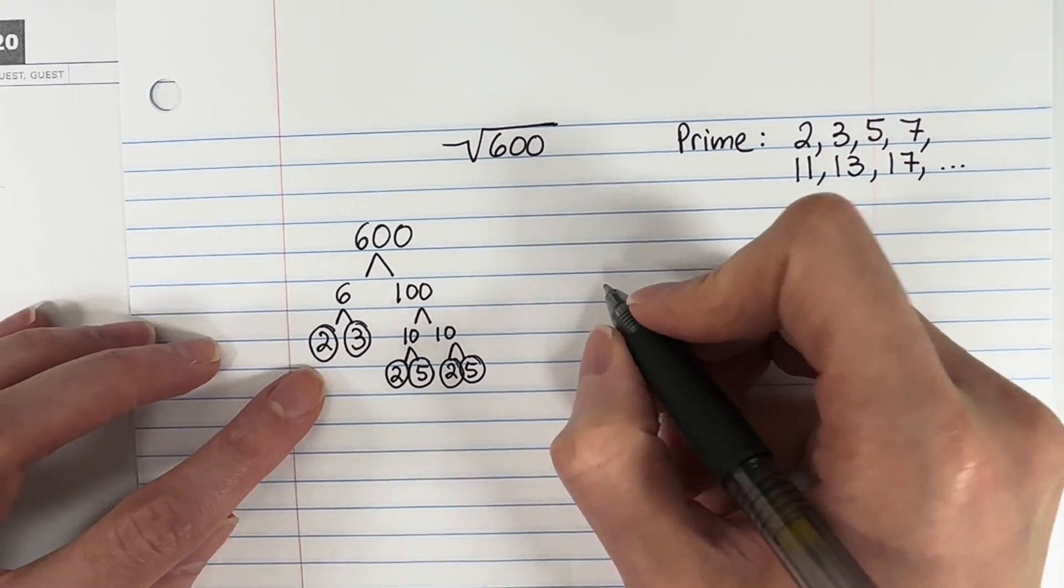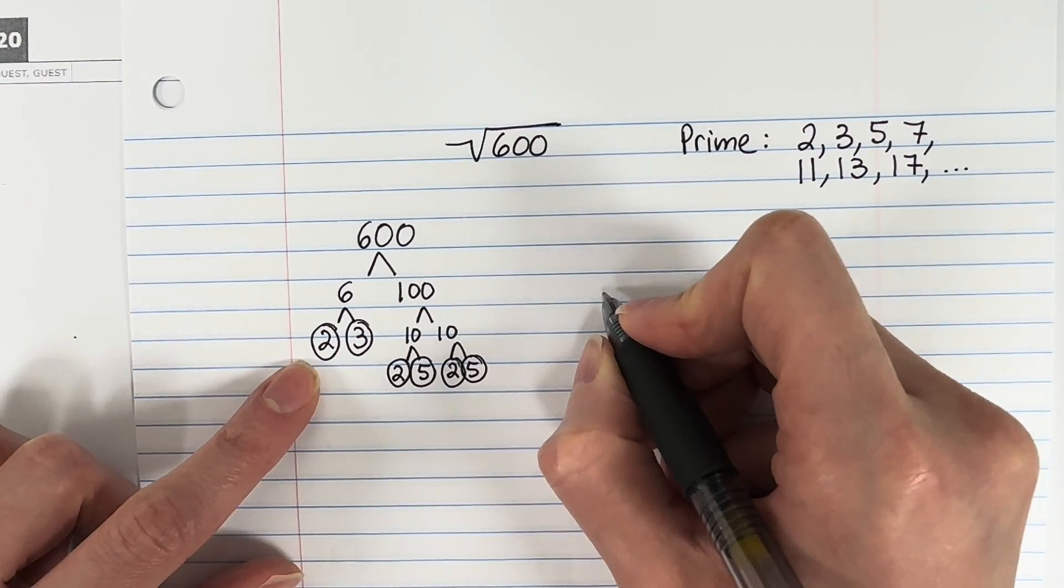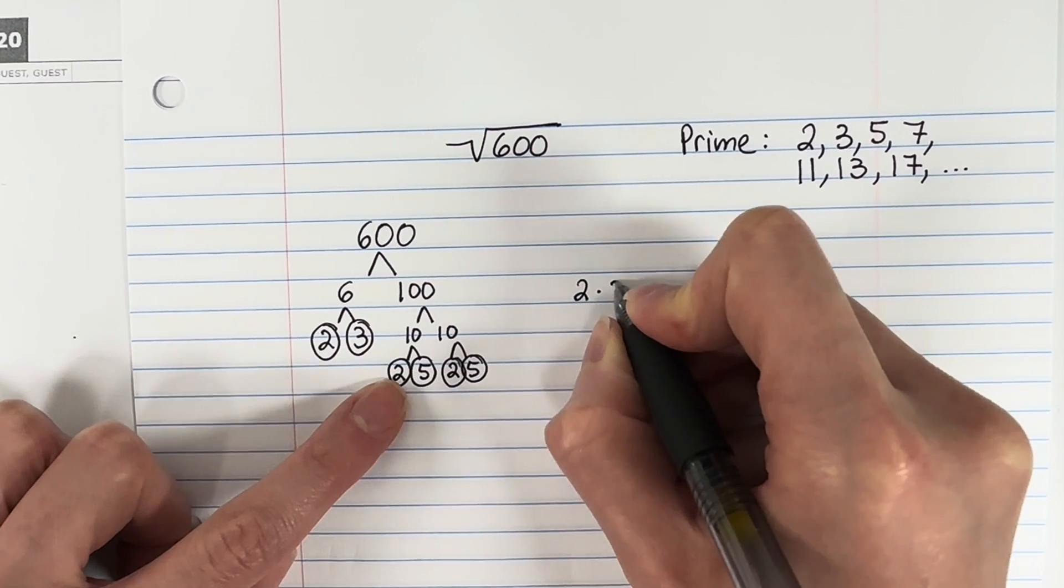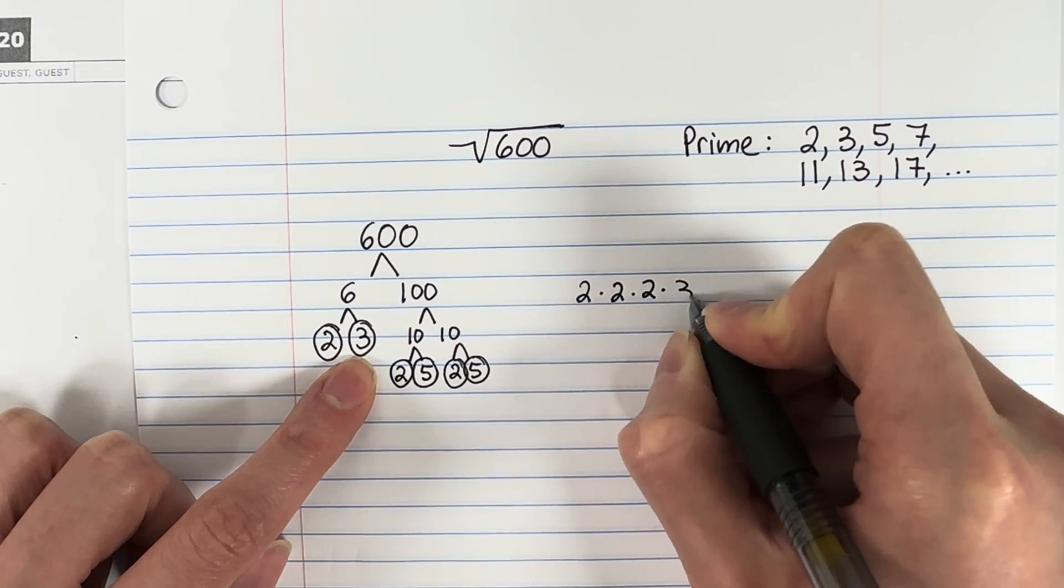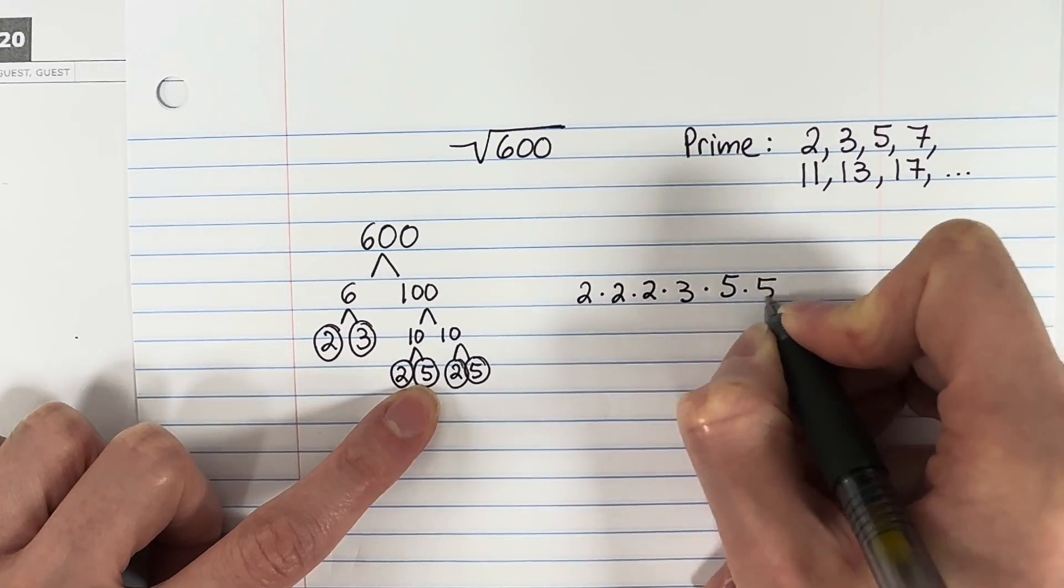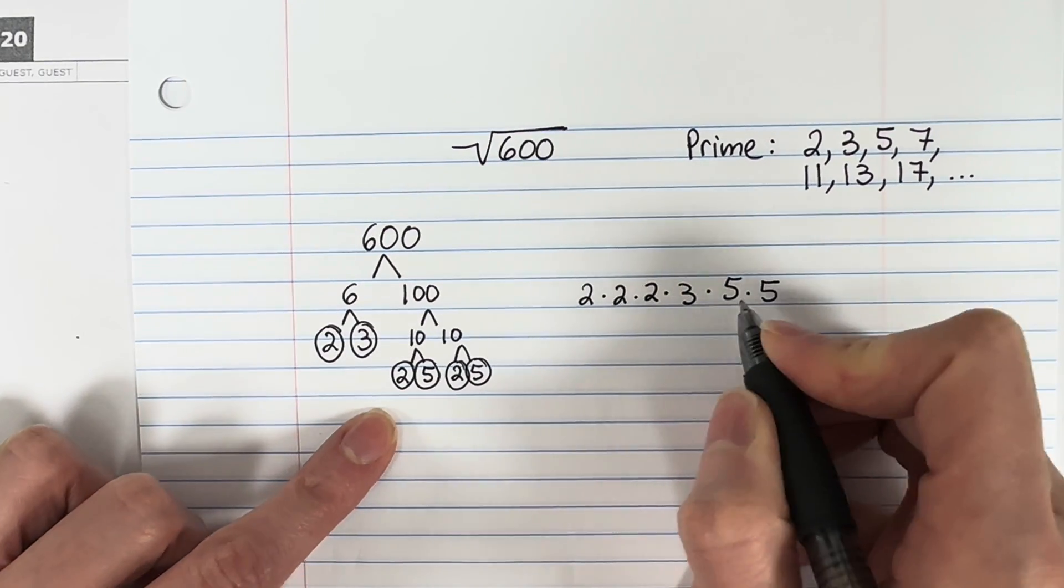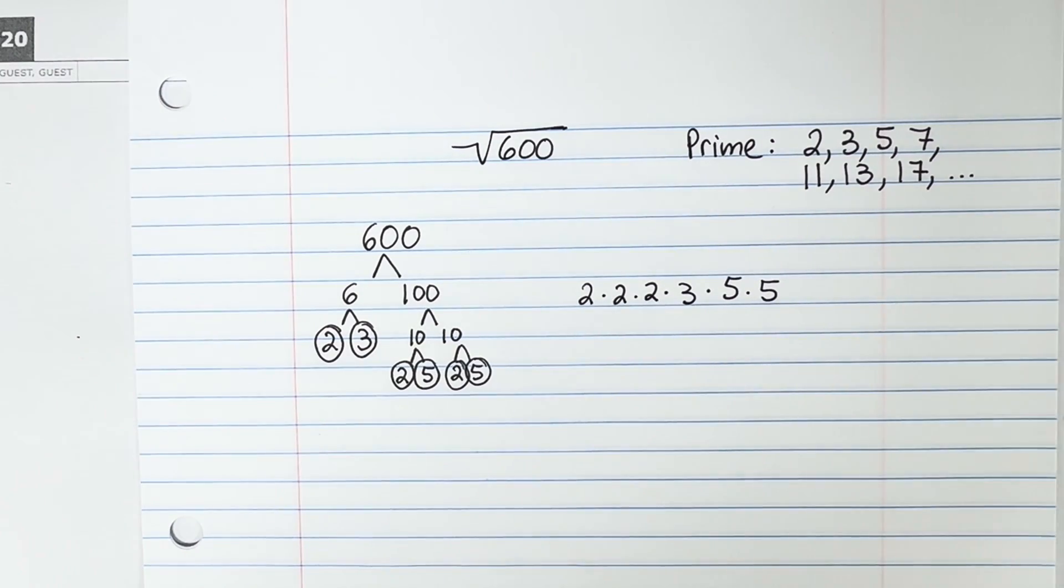So now let's go ahead and write our list. I'm going to write it in order, small to big. So I have 2 times 2 times 2. So there's 3 2s times 3. That's 1, 3, and 2 5s. So 2 times 2 times 2 times 3 times 5 times 5. That will get you 600.